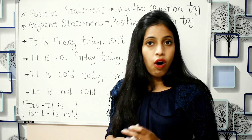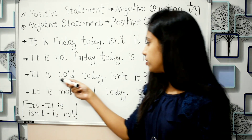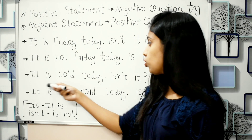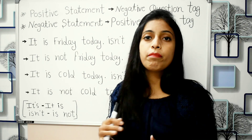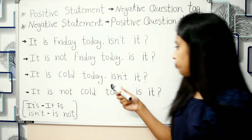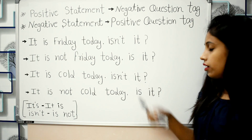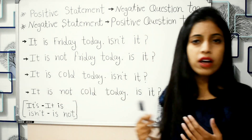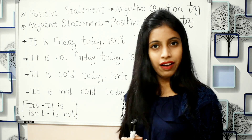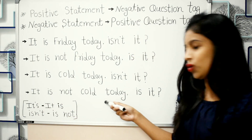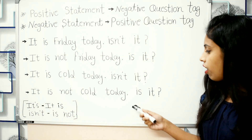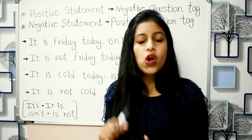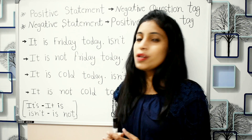For example: 'It is cold today, isn't it?' — positive statement, negative tag. And: 'It is not cold today, is it?' — negative statement, positive tag. The rule is simple: positive statement gives a negative question tag, and negative statement gives a positive question tag. Let's see some more examples.